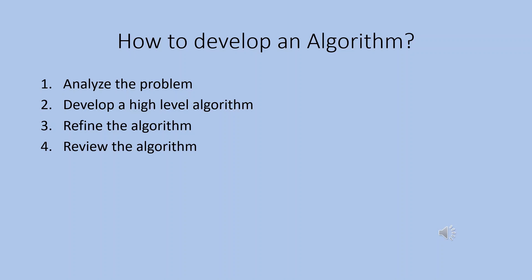Then the fourth step is to review the algorithm. We need to analyze the algorithm — is it perfect, is that the expected output? That is the important thing. This algorithm takes three and four steps. If we reach the assumption, then the algorithm uses the result. The step is to save the algorithm.